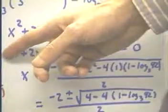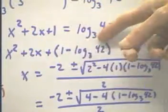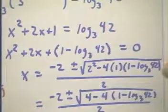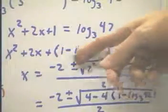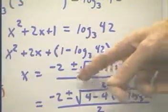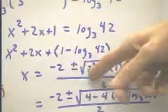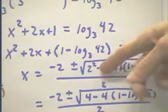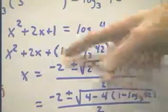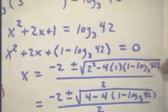This is a quadratic. A is 1, B is 2, C is 1 minus log 3 of 42. So we get the solution x equals negative 2 plus or minus the square root of b squared. Well, b is 2, so we've got 2 squared, and then minus 4ac. A is 1, C is this quantity here.